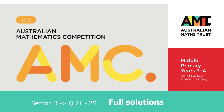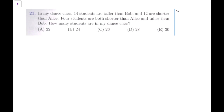Alright, so we are going to do section 3 of AMC 2019, questions 21 to 25. This is section 3, and these 5 questions are a little bit more difficult than the previous questions, so be ready for a little bit more working out and detailed solution, because these are 5 marks each.